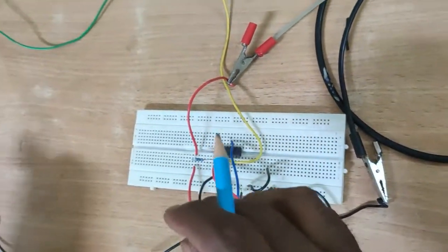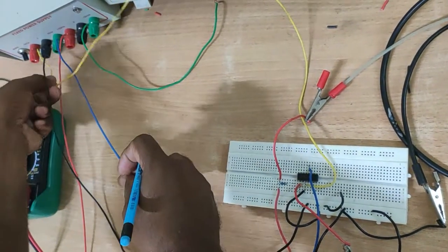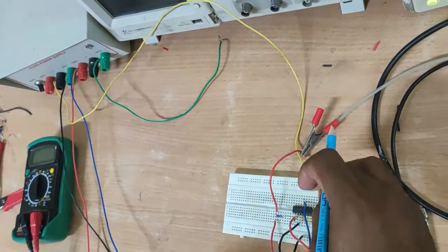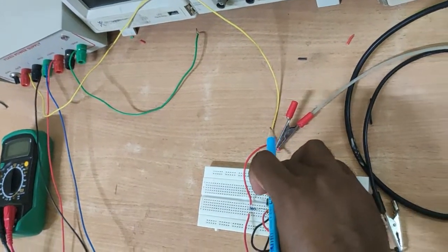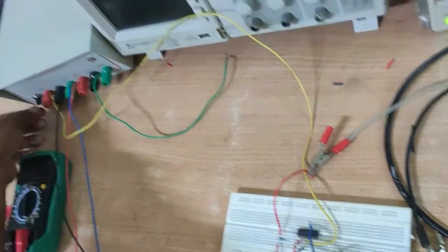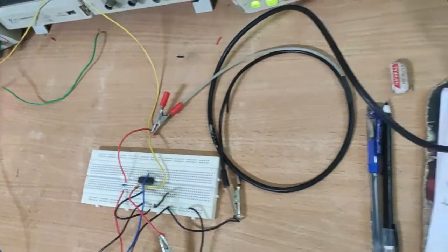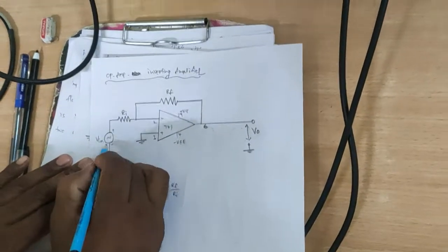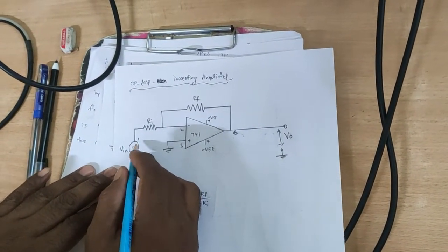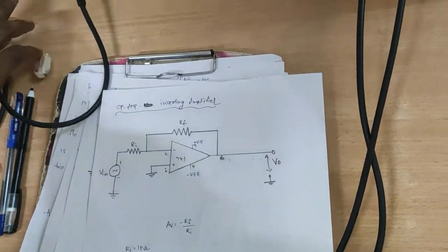Next, go to the switch. The plus 5V, ground, and minus 5V supplies are connected to this IC. Switch on the power supply. The input Vin is taken from the function generator.